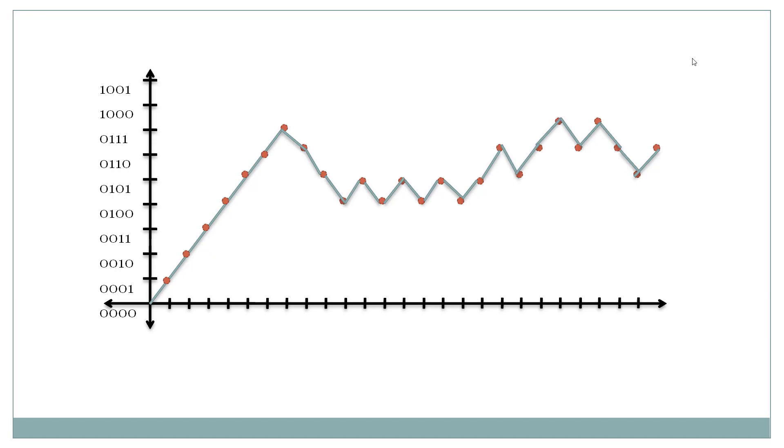At the start, the maximum time the counter can take to reach the input analog value is 2 to the power n minus 1 times T clock, where n is the number of bits it can count.